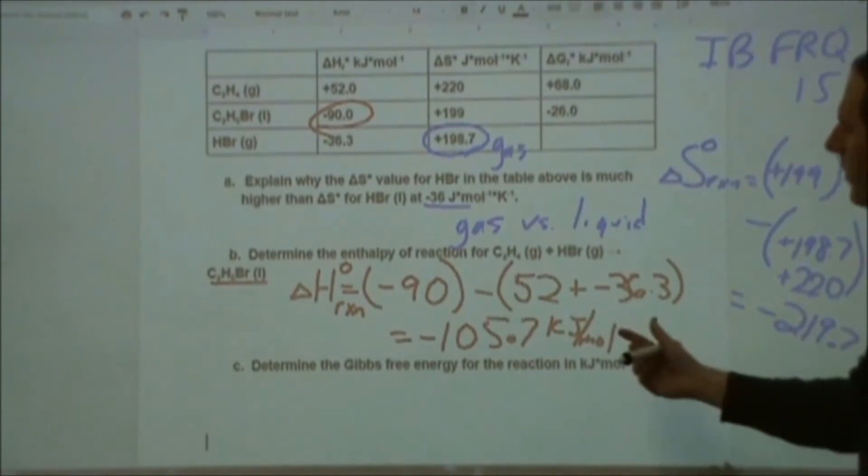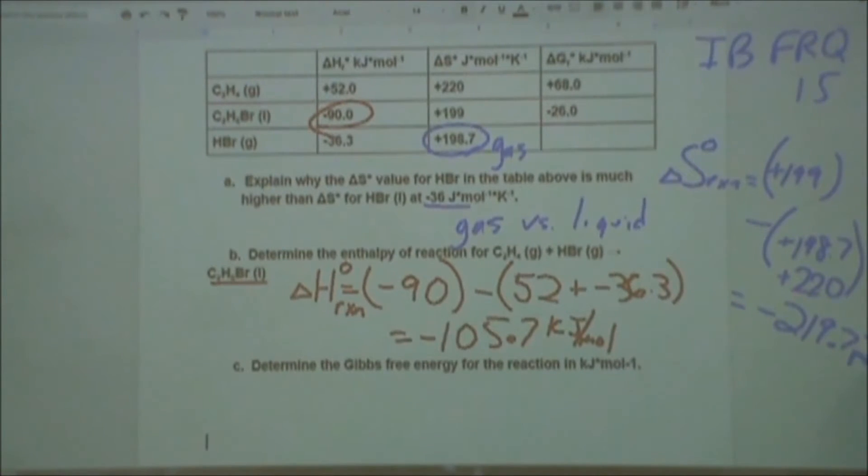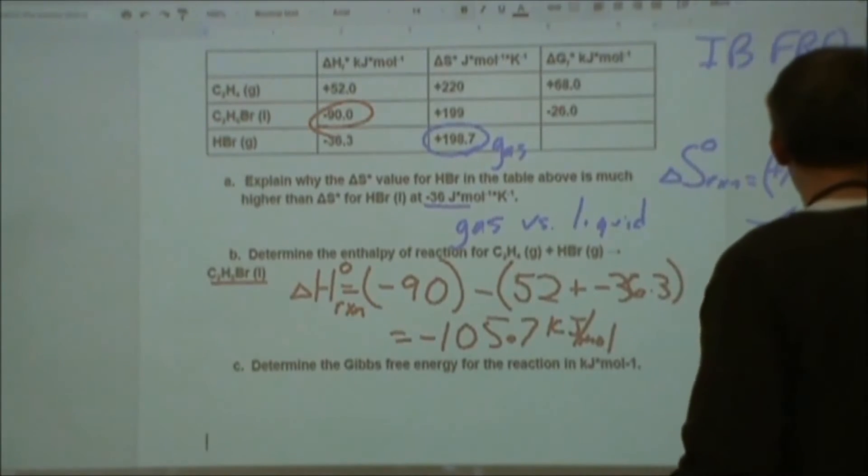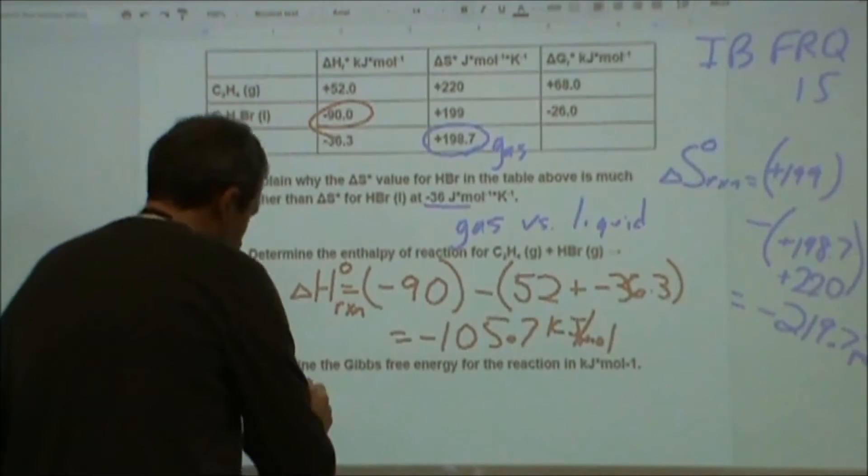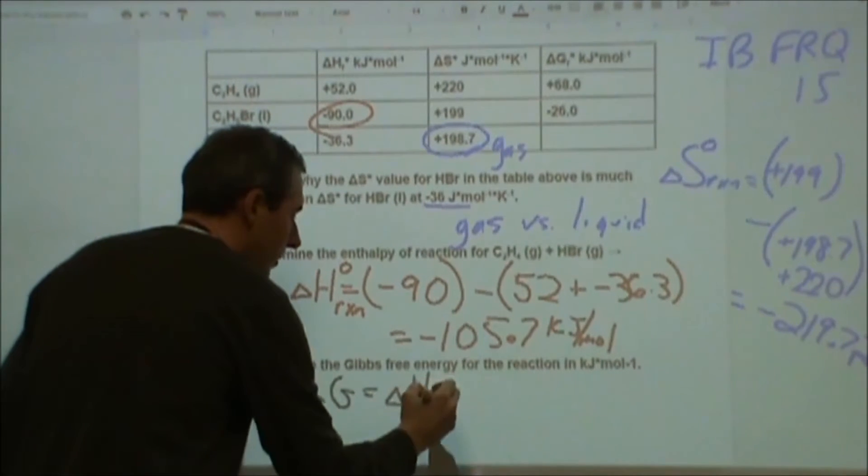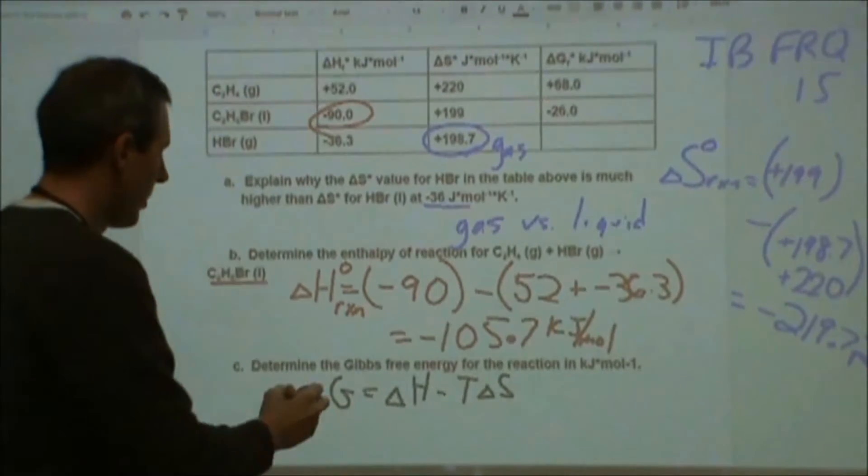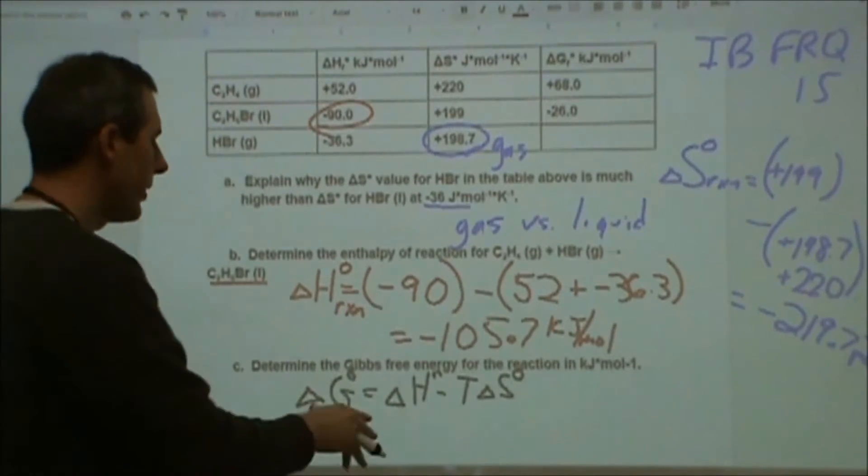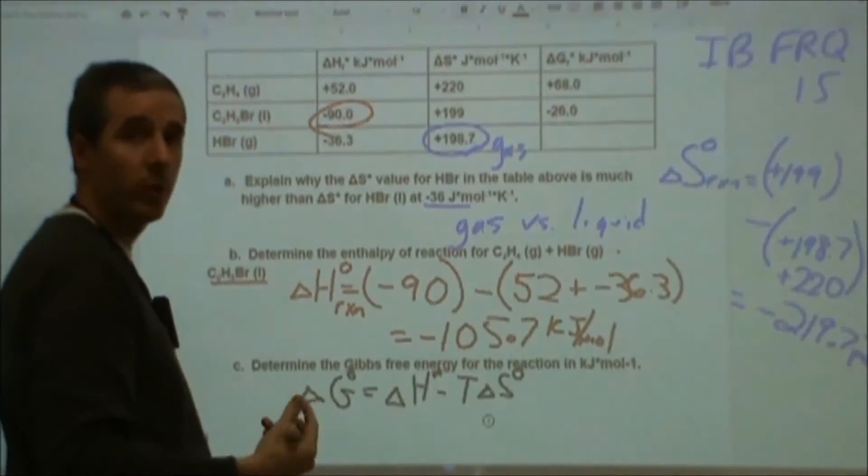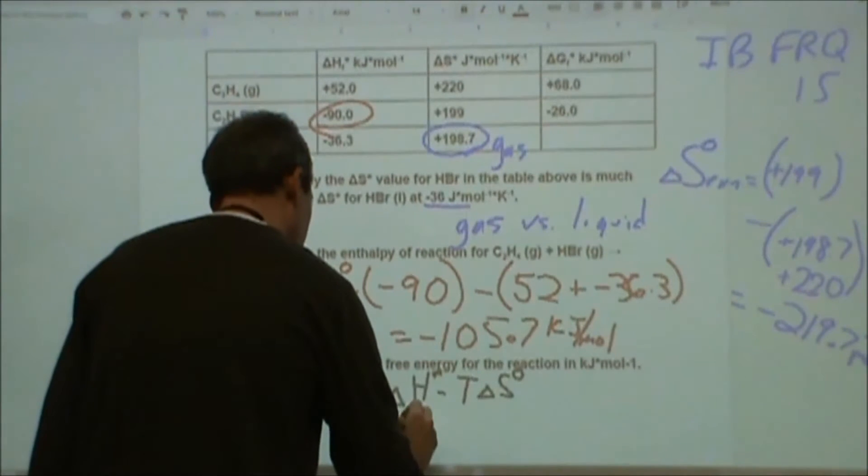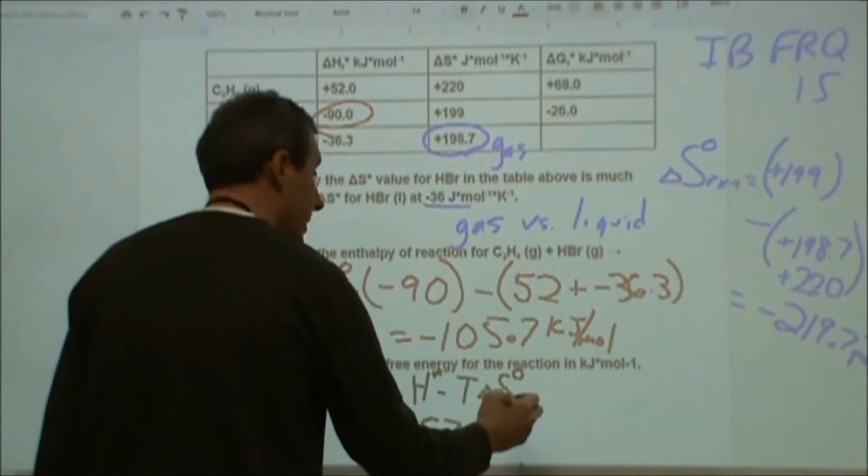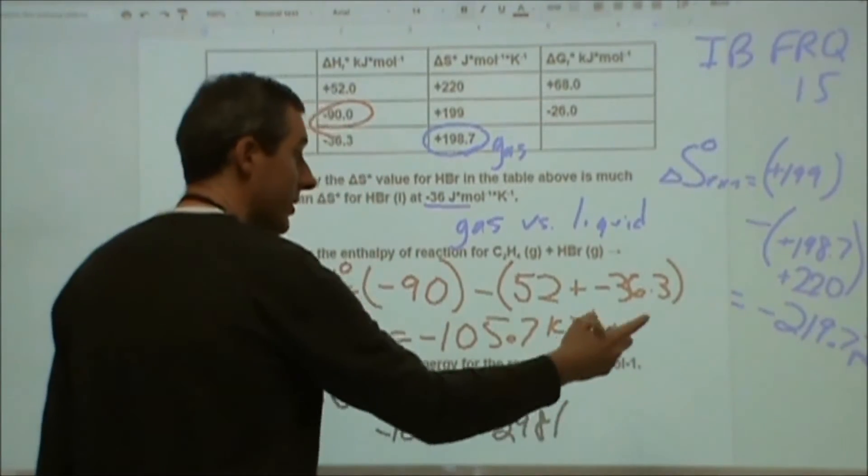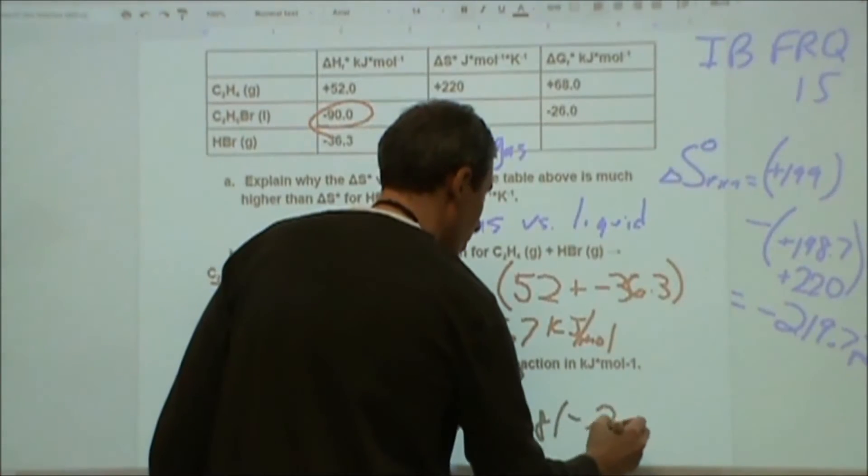So what we're going to do is combine this with this. But the units of this are in joules. And so in order to get our answer in kilojoules, we're going to have to change this to 0.2197 to go along with our 105.7. So now we're ready to calculate our Gibbs free energy from that. Delta G is going to be equal to our enthalpy minus T delta S, and we're looking at standard conditions for all of these. We know our enthalpy change, our entropy change, and our temperature is standard temperature, 298 Kelvin. So we're going to plug in negative 105.7 minus the temperature, 298 Kelvin, times this negative 0.2197.